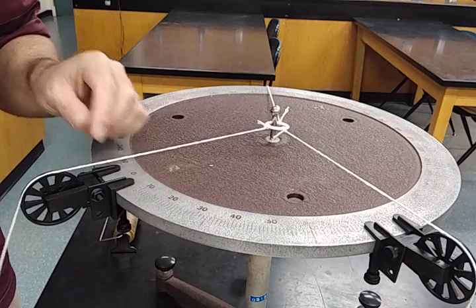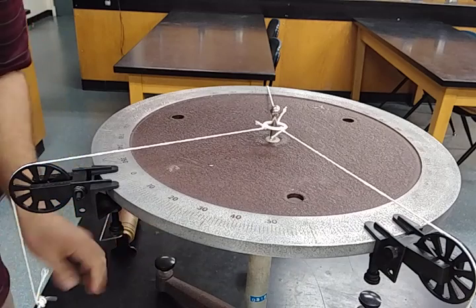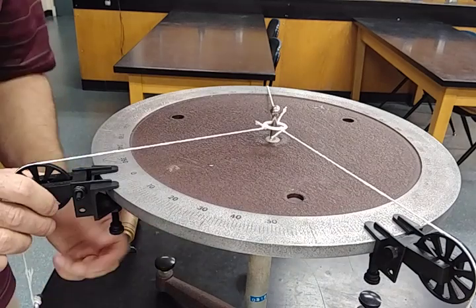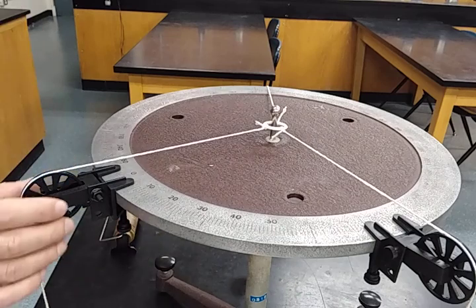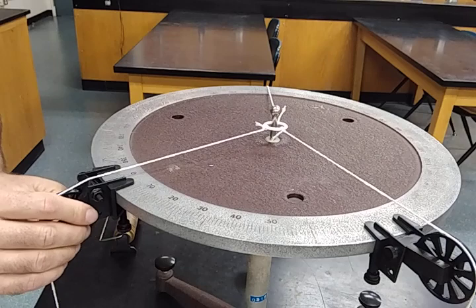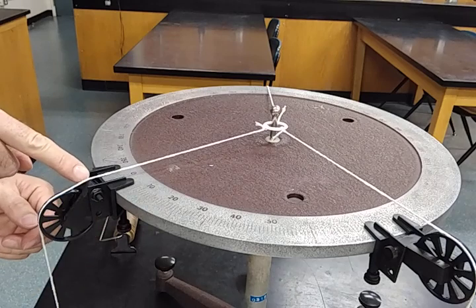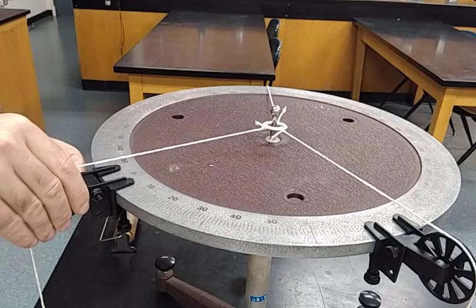A couple things about the pulleys here. We don't want it to be like this. That's going to throw off our data a bit. So we want to tighten that up down here. Also, we can see that this pulley itself can be pushed up or down. We don't want this. That's going to be rubbing on there. We want to get that string as horizontal as possible.